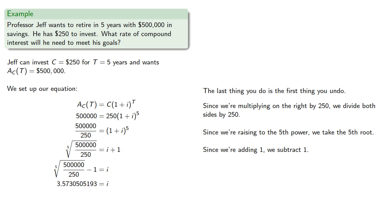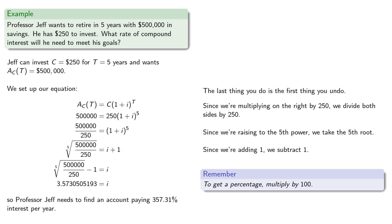And note that if we want to turn this into a percentage, we multiply by 100 and round appropriately. And so Professor Jeff needs to find an account paying 357.31% interest per year. Probably he should have started saving a little earlier.